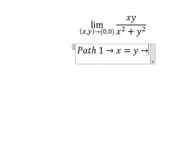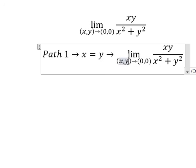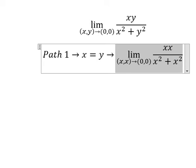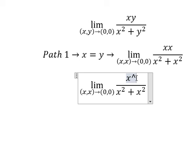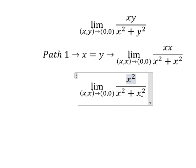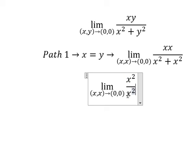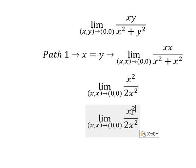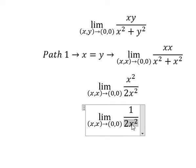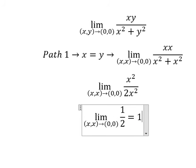So we need to change y into x. So this one we have xx where xx plus xx. We have 2x squared. So x squared simplifies by x squared and now we have one over two.